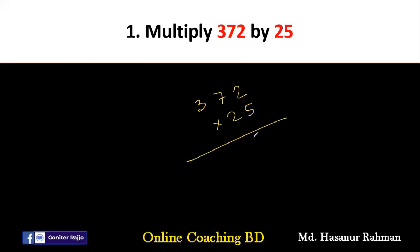First we have to multiply 372 by 5. We know that 5 times 2 is 10, so we carry 1. 5 times 7 is 35 plus 1, that is 36, so we carry 3. 5 times 3 is 15 plus 3, that is 18.